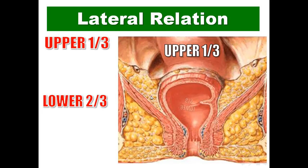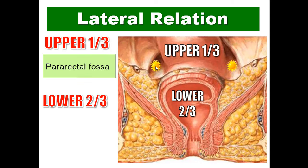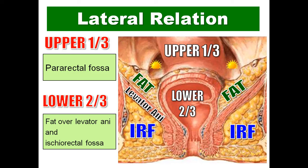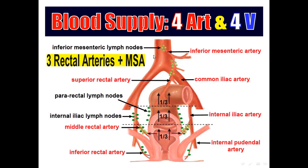Regarding the lateral relations, on each side of the rectum we distinguish the upper third and the lower two-thirds according to peritoneal covering. The upper third is covered on each side with peritoneum, so it is related to the pararectal fossa containing small intestine. The lower two-thirds are related to three structures: fat over levator ani, levator ani itself, and the ischioanal fossa.